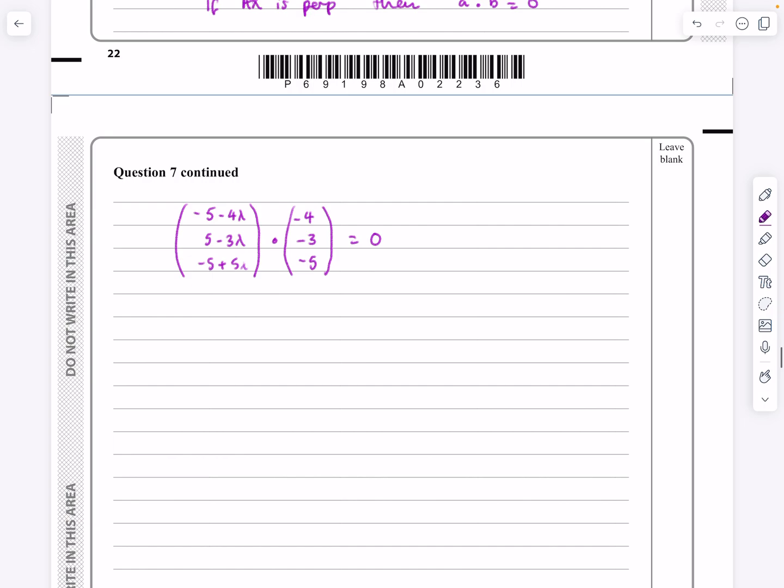So doing that then, what's that going to give me? That's going to give me 20, 16 lambda, minus 15, 9 lambda, minus 25, 25 lambda, that's all equal to 0. So now if I tidy all that up, I've got 25 and 25, I've got 50 lambda there, I've got minus 20 equals 0. So lambda is equal to 2 fifths.